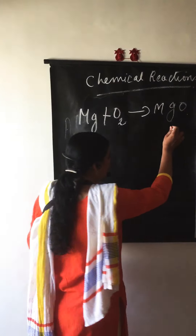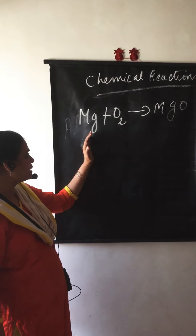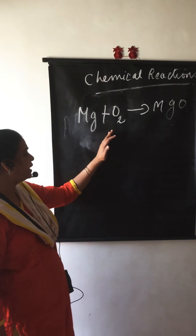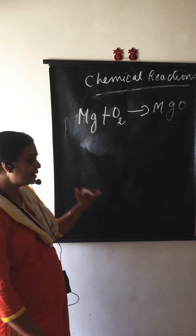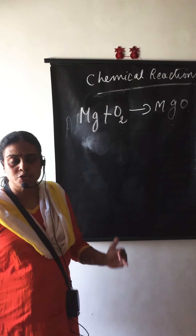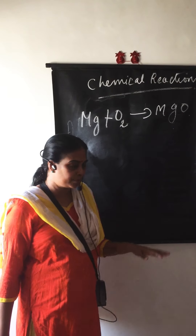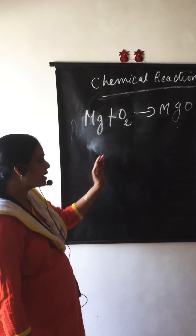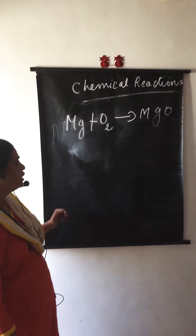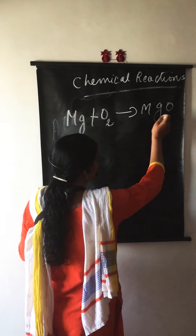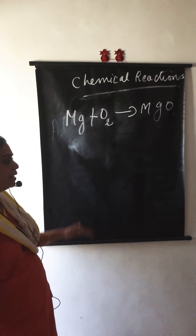When an element comes in a compound, you have to see the valency. When it comes as a free element, you don't have to see valency — only whether it is monoatomic, diatomic, or polyatomic. Once it comes in a compound, check the valency. Here the valency of magnesium is 2 and oxygen is 2, so it is written as MgO.